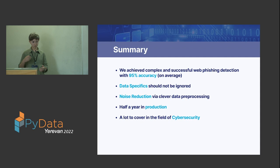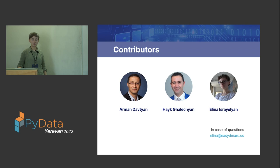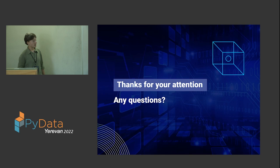To summarize, we achieved a complex and successful phishing detection solution with 95 percent accuracy on average. We did this by thoroughly understanding the data specifics, not ignoring them, through good noise reduction, data preprocessing, feature extraction, and using features that are not based on URL length. We are already half a year in production and maintain this 95 percent accuracy. There is still a lot to cover in the field of cybersecurity for ML. Thank you for your attention, and I want to thank our other contributors Arman Davcian and Hayk Halecian.